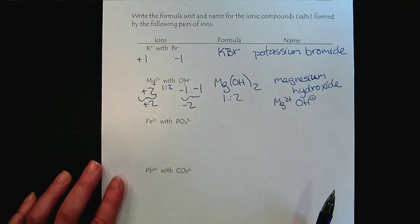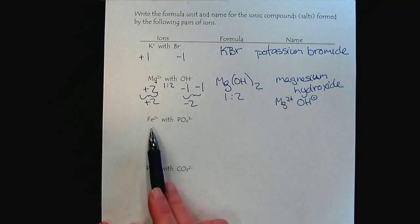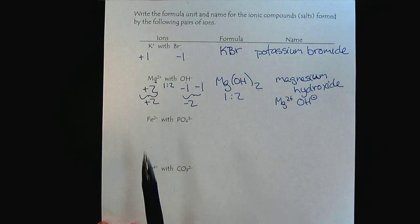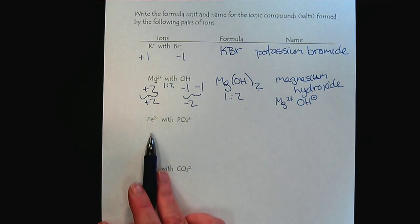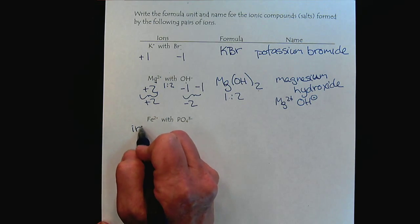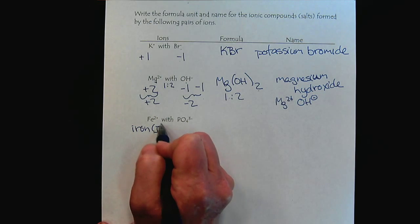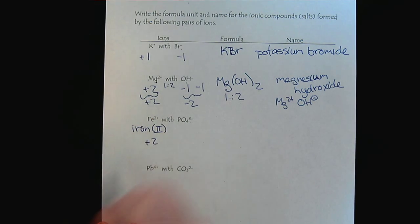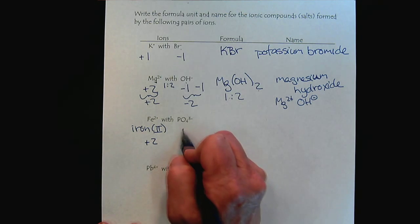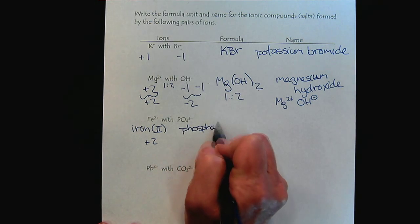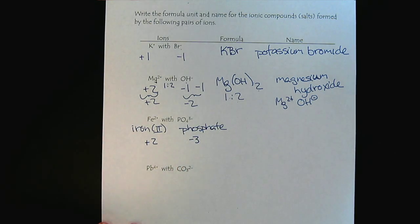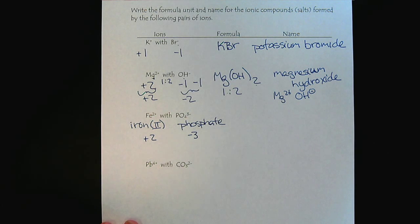Let's look at another example. Here, we have iron 2. So, remember that iron is a transition metal and it has the ability to form more than one oxidation state. So, the name of this ion is iron with a Roman numeral 2. So, we have a plus 2 coming from the iron. And then we have phosphate, which is a minus 3. So, now we need to bring these ions together in a ratio that will create a neutral compound. At this point, it can be very helpful to think about the multiples. We want to find the least common multiple.